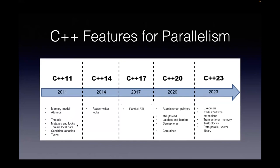With C++14, a very low-overhead reader-writer lock was introduced. When C++17 came about — roughly three years ago — parallel STL algorithms were introduced, and that is when C++ really took off for heterogeneous programming. C++20 is probably the biggest jump in C++ after C++11. It introduced atomic smart pointers, data analysis, and coroutines — a very strong feature for enabling better parallelism.